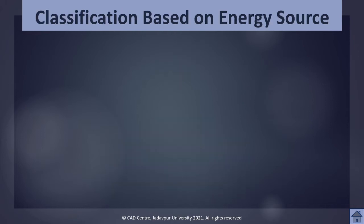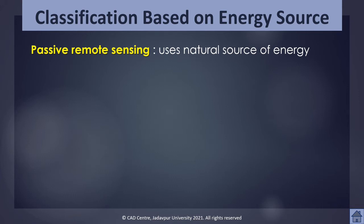The next is classification based on energy source. The sun provides a suitable source of energy for remote sensing. This energy is either reflected — for visible and reflective infrared wavelengths — or absorbed and then re-emitted, as for thermal wavelengths. Remote sensing systems which measure energy that is naturally available are called passive remote sensing, whether it is being emitted or reflected.